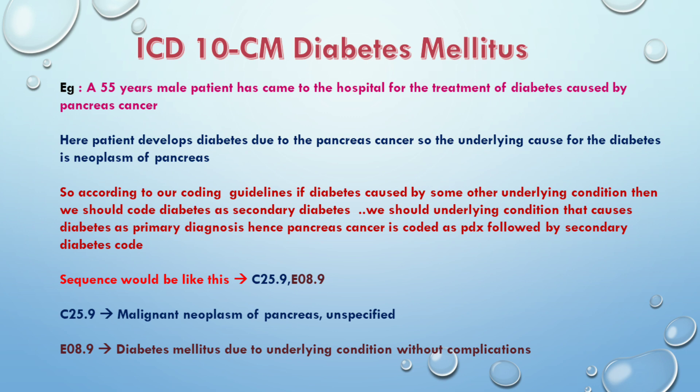The sequencing is C25.9, E08.9. C25.9 means malignant neoplasm of pancreas, unspecified. E08.9 means diabetes mellitus due to underlying condition without complications, meaning diabetes is caused by some underlying condition — in this case, the pancreas cancer. We have already covered the underlying condition; we then report any complications of diabetes as mentioned in E08.9.